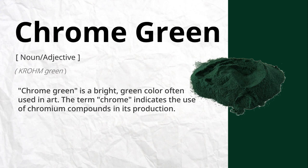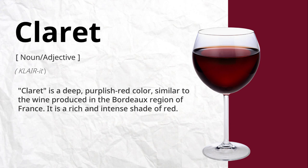Chrome green is a bright green color often used in art. The term chrome indicates the use of chromium compounds in its production. Claret is a deep, purplish-red color similar to the wine produced in the Bordeaux region of France.